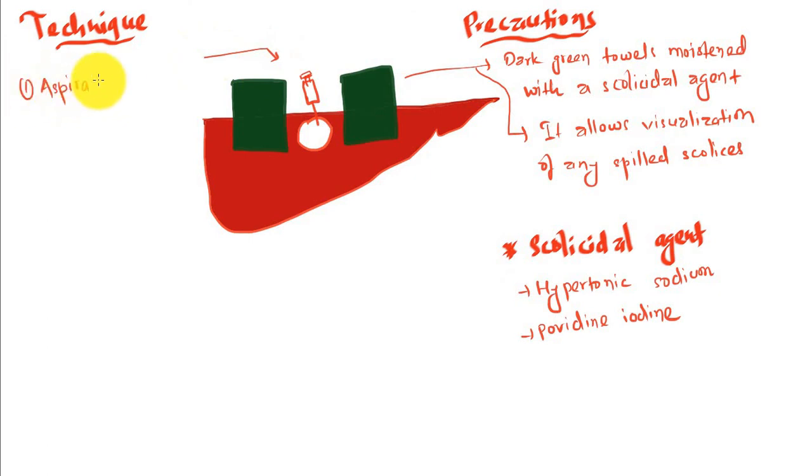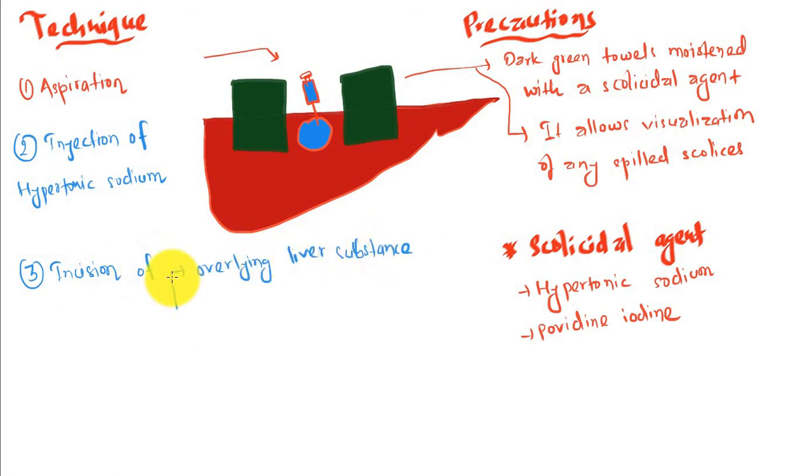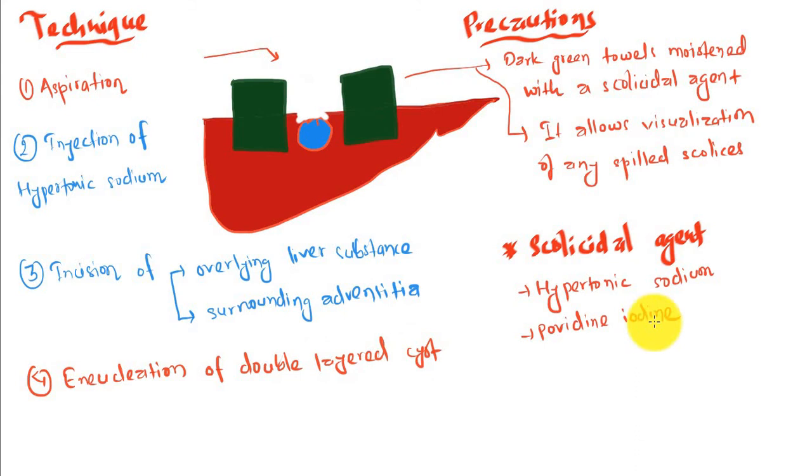The technique is aspiration: first, aspirate the content, then inject hypertonic sodium, which is a scolicidal agent. Next is incision of overlying liver substance and the surrounding adventitia. Last but not least is enucleation of the double-layered cyst.